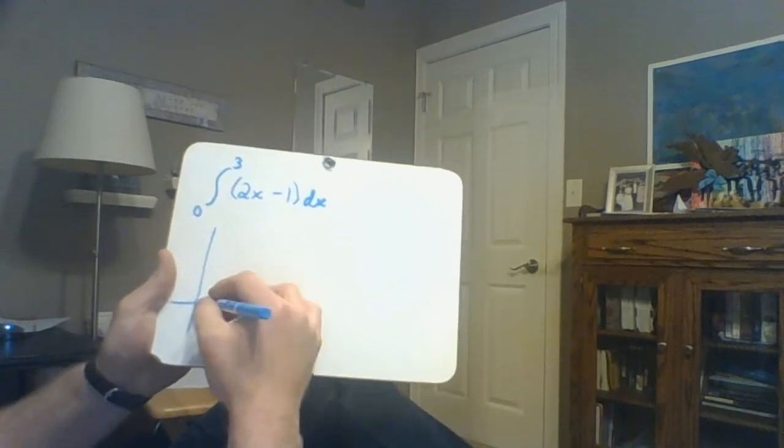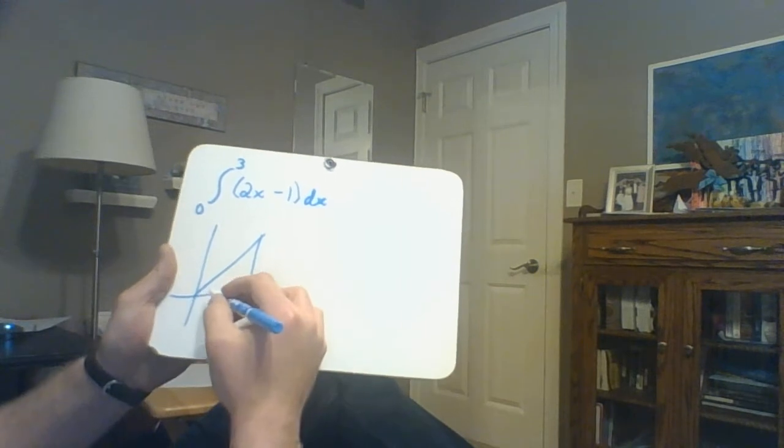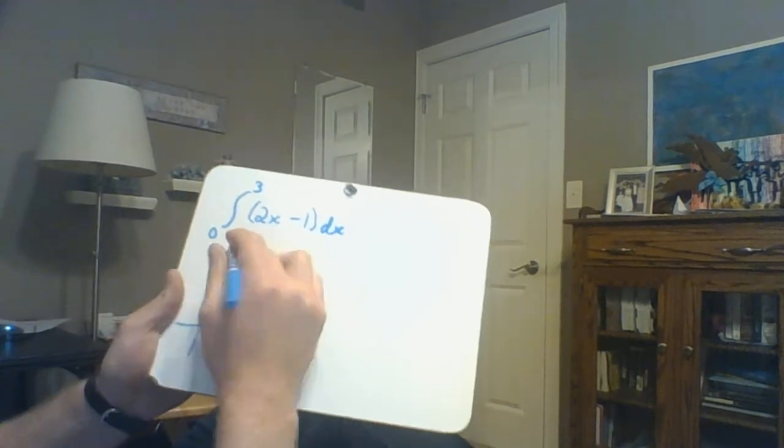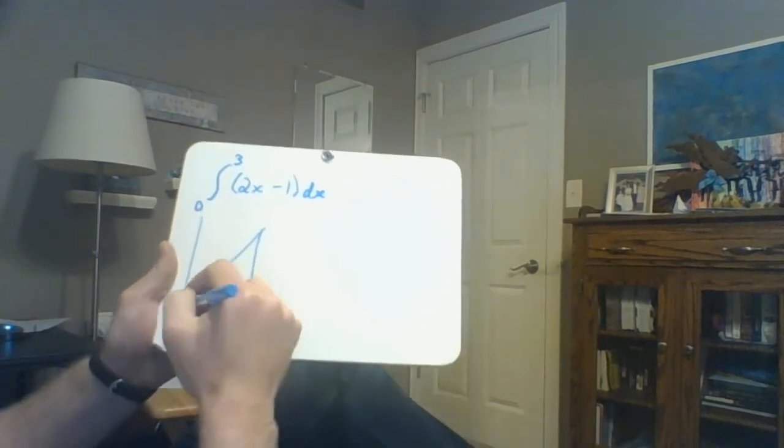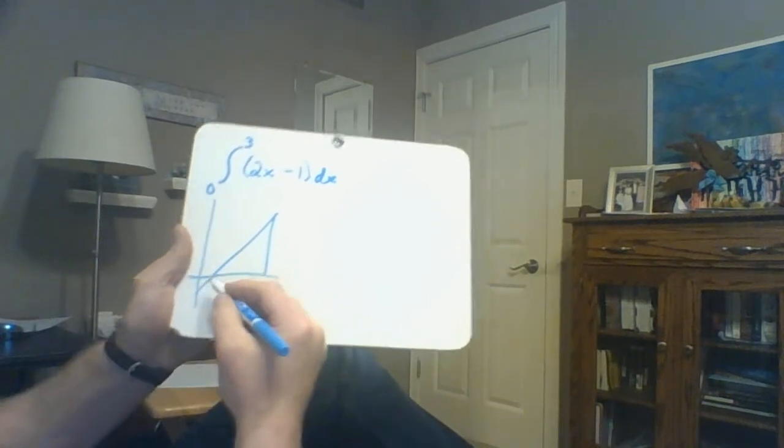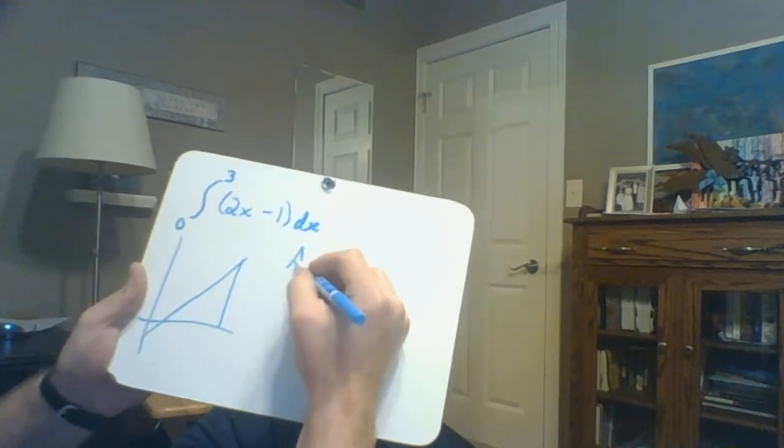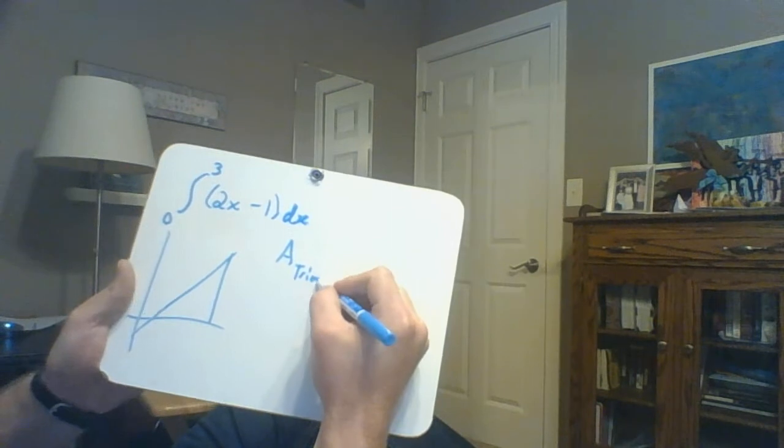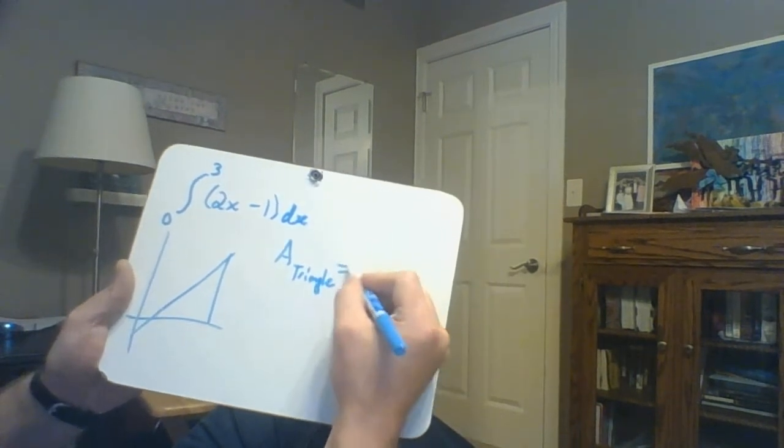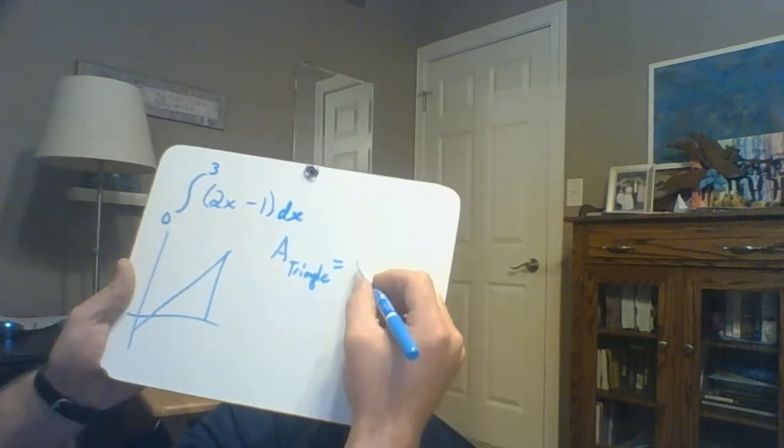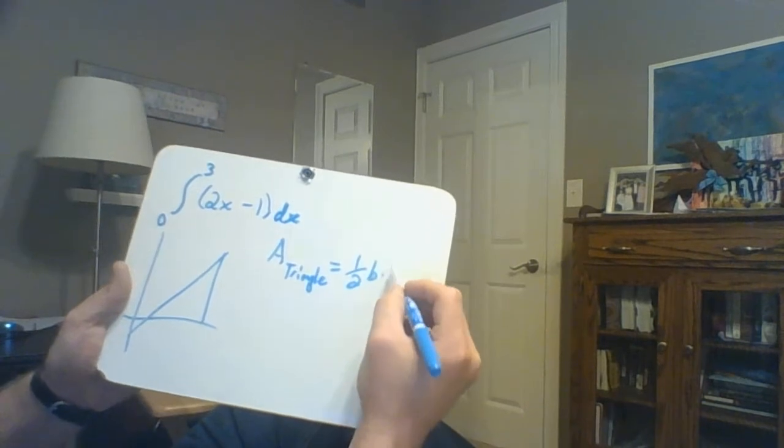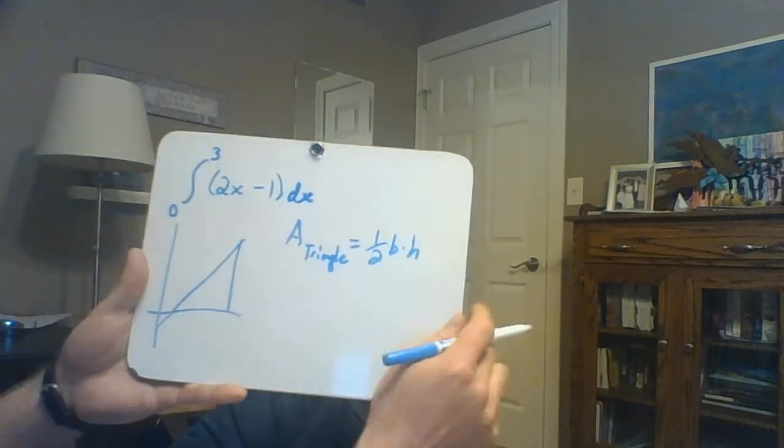So like I said, when we graph this, that was a triangle, and then another triangle below the x-axis, right? And so you need to know the area formula for a triangle, and just use that. So you're going to be drawing pictures, you're going to be going back and doing geometry work to get areas.